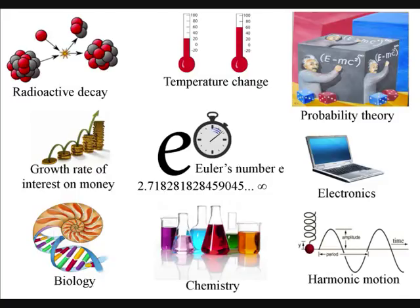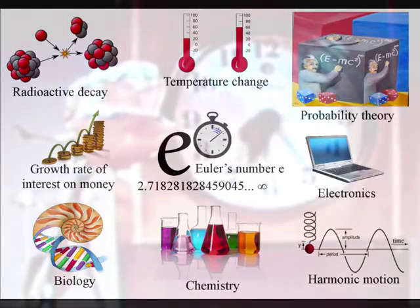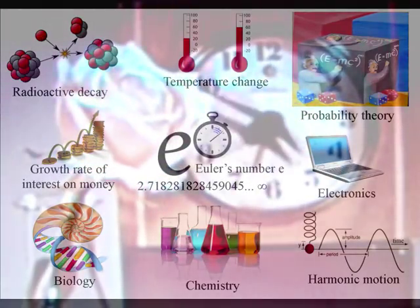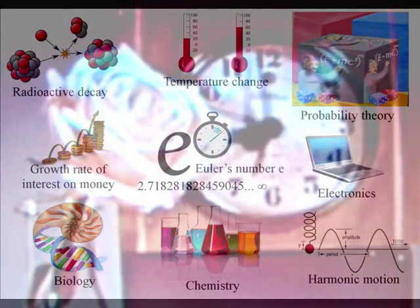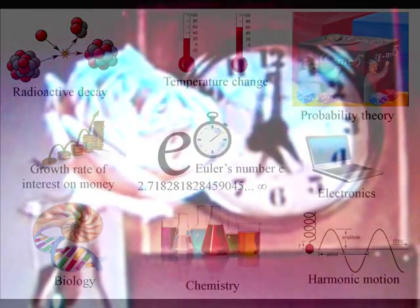These are just a few of the subjects that are connected to Euler's number E, but there is one thing that connects all the diverse subjects that the number E is connected to, and that is, they are all processes over a period of time. And I believe this is the key to understanding why the number E is everywhere in nature and physics.